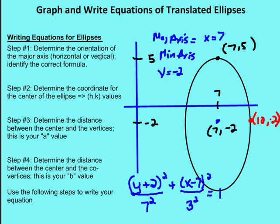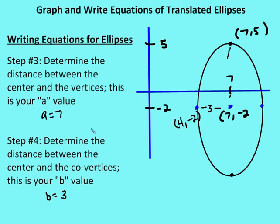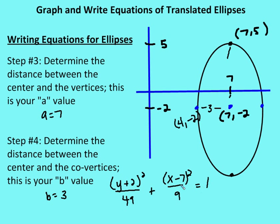Now I can write the complete equation for the ellipse. With a squared equals 49 and b squared equals 9, the equation is: y plus 2 squared over 49 plus x minus 7 squared over 9 equals 1. In some cases you'll be given the foci coordinates to determine the c value, which you may need to figure out a and b. That's it for graphing and writing translated ellipses. Please join us for discussions on other conic sections — parabolas and hyperbolas — in the next editions on conics and math.